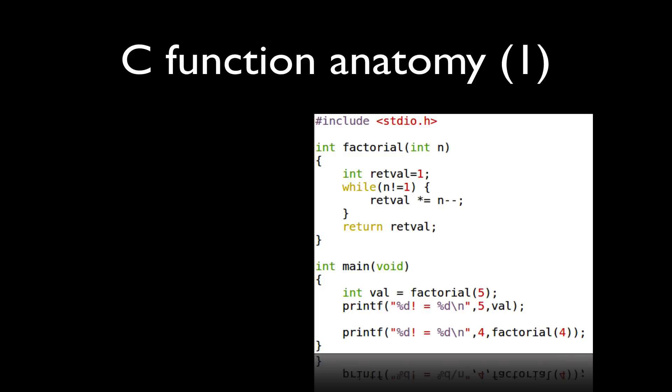So let's take a look at the anatomy of a function in the C programming language. Every function has a prototype declaration and this prototype tells us a number of things. It tells us who can call it, the type of the value it returns, and the name of the function as well as the arguments that it takes, if any.